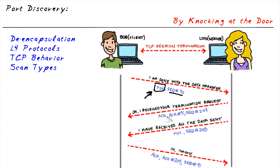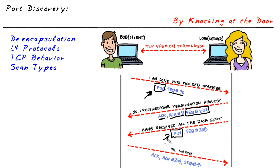The recipient — in this case Lois — would send back an acknowledgement, effectively saying she received the termination request. She also sends an acknowledgement number: because Bob's sequence number was 90, Lois is saying she would expect the next sequence number to be 91. Lois is also sending her own sequence number of 207, and if she has nothing further to say, she can send another TCP segment with the FIN flag set.